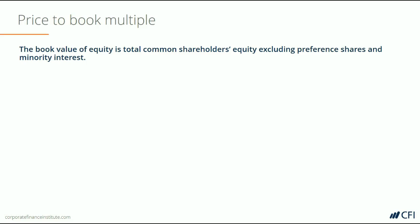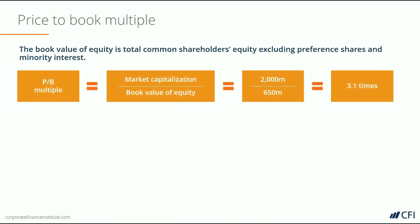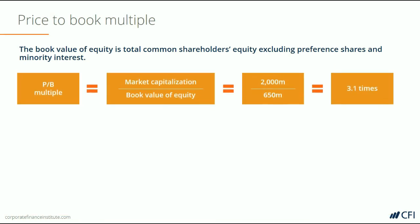Let's now calculate the price-to-book multiple for XYW. The book value of equity is total common shareholders' equity, excluding preference shares and minority interest. For XYW, total shareholders' equity is $650 million. Since market cap is $2,000 million, the price-to-book multiple is 3.1 times.